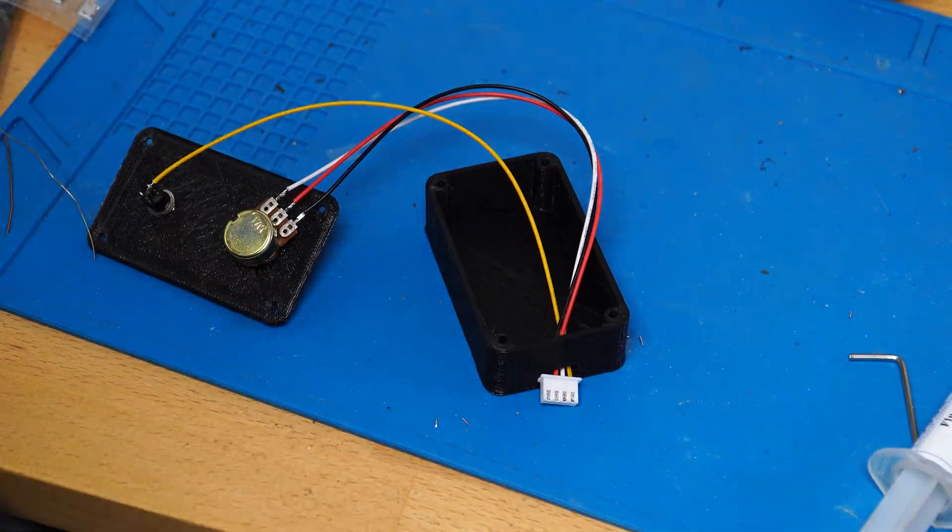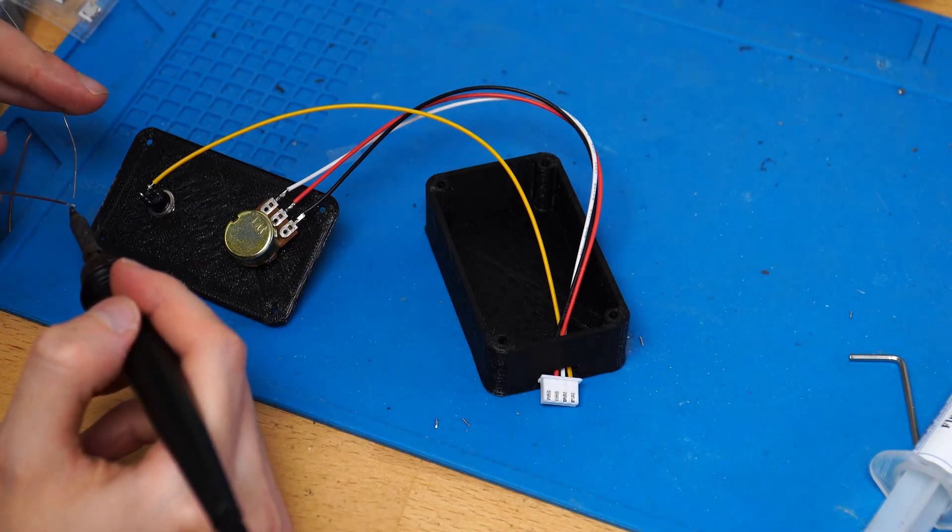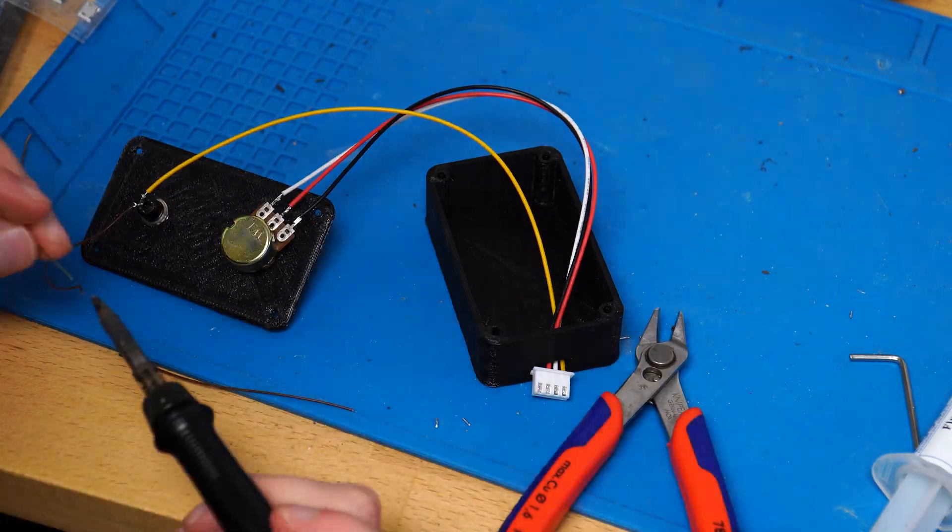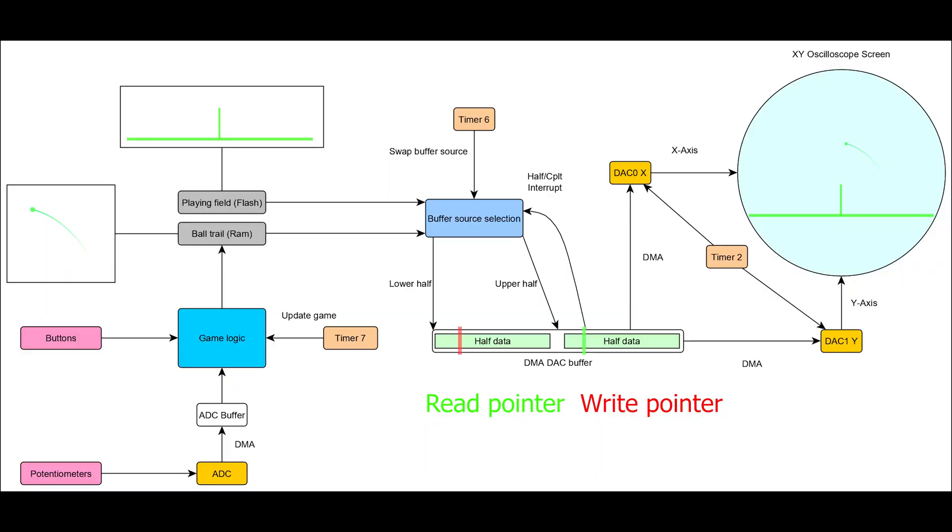On the software side I have experimented a bit to find the best solution to draw the playing field and ball, and the best option seems to be to use a short cyclic buffer with DMA pushing data to the DACs and either filling this buffer from the playing field stored in flash or a dynamic buffer drawing the trail of a ball from RAM. The DAC is triggered using a timer, as well as the game logic and updating and swapping the buffers to be drawn.